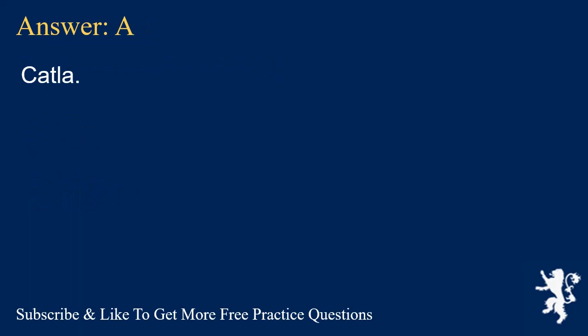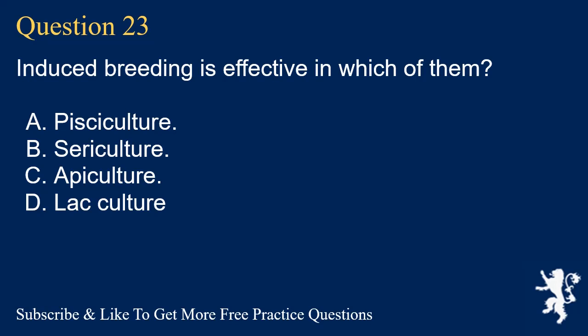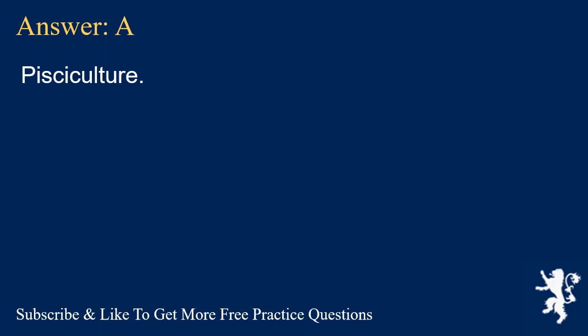Question 23. Induced breeding is effective in which of the following? A. Pisciculture. B. Sericulture. C. Apiculture. D. Lac culture. Answer: A. Pisciculture.